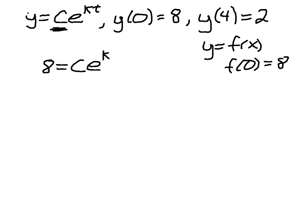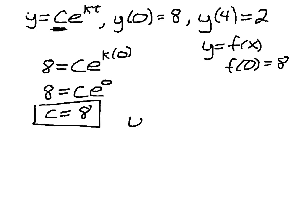...so I'm plugging in for T here because K is a constant, which means 8 is equal to C e to the 0. I know that e to the 0 is 1, so C is equal to 8, which means right now my function actually looks like 8e to the KT.